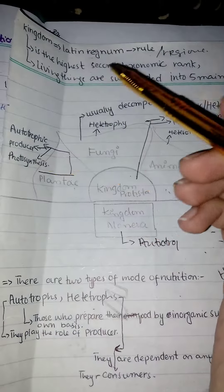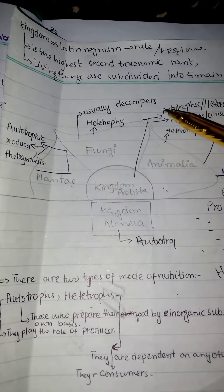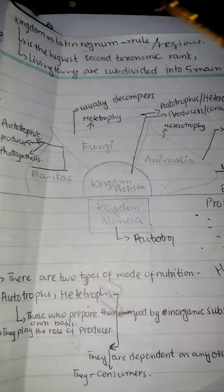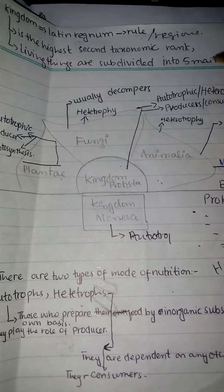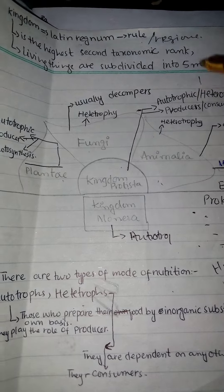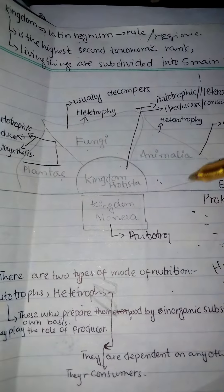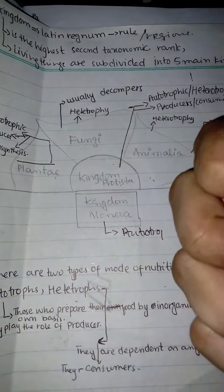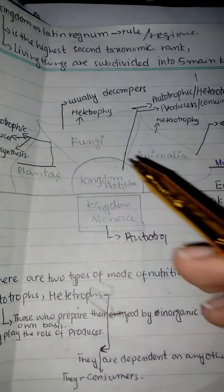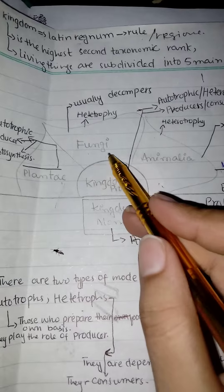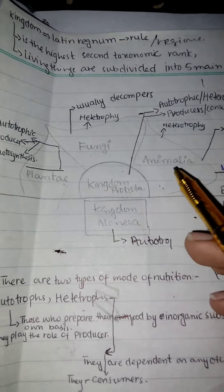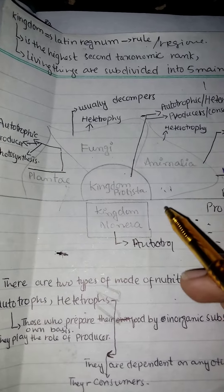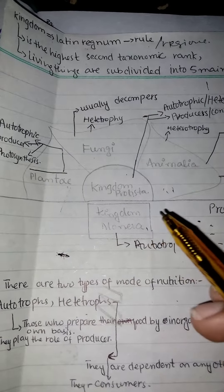It is the second highest taxonomic rank and all living organisms are divided into five main kingdoms: number one is Plantae, number two is Fungi, then Protesta, then kingdom Animalia, then kingdom Monera.